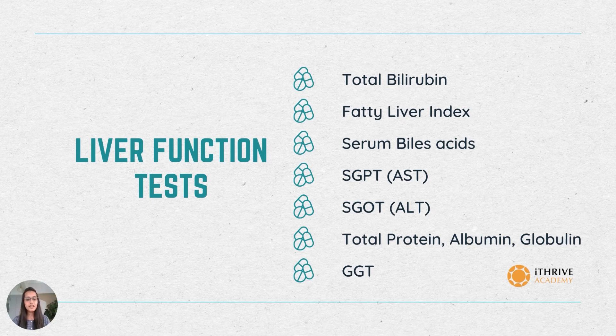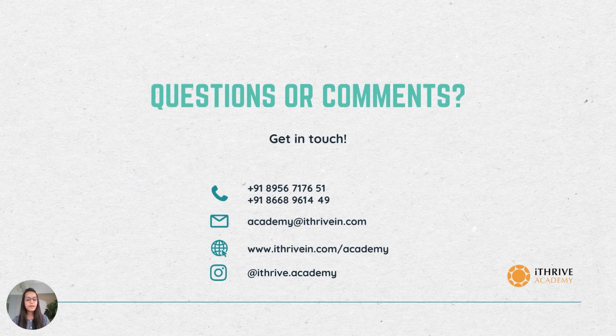Lastly, there is GGT, that is gamma glutamyl transpeptidase. This is also an enzyme made in the liver, and the levels of GGT can determine the functioning of the liver.